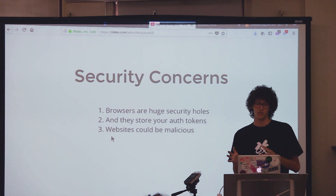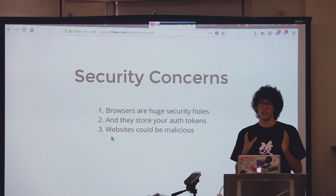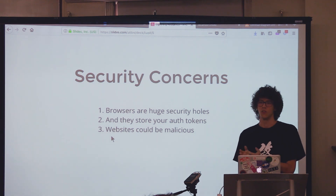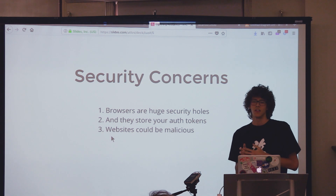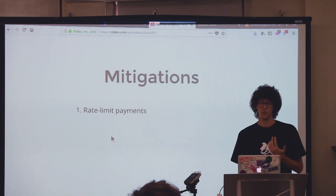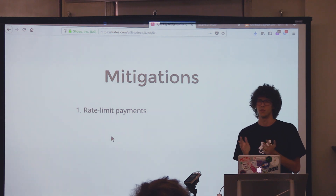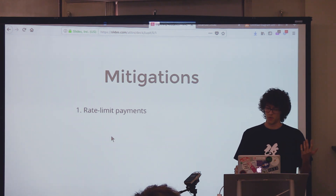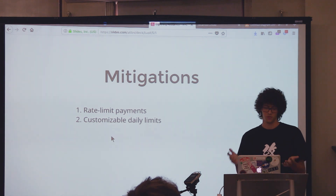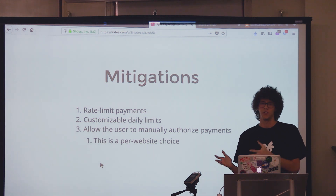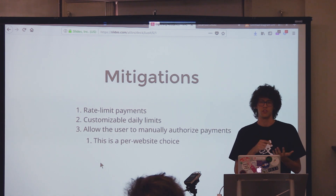Also a website could be malicious. The goal of the project was to focus on automatic payments — literally, you don't even have to approve each single payment; it just goes automatically. A malicious website could empty your wallet. So there are some mitigations: you can rate-limit payments — the default is 30 or 60 per minute, which is quite reasonable. You can set limits in satoshis, and it's customizable. You can also allow the user to decide if they trust the website enough for automatic payments, or require authorization for each single payment.